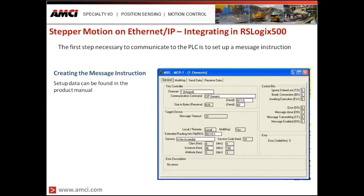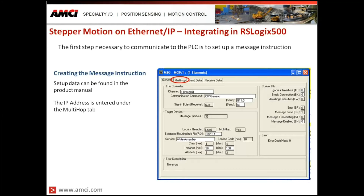The message setup also specifies the command structure and the number of data words being moved to the device in a message write, or the data being read from the device in a message read. Once the basic message structure is set up, we enter the IP address of the device under the multi-hop tab of the message setup. The default is typically 192.168.0.50, but it can be whatever you have configured the device's IP address to be.